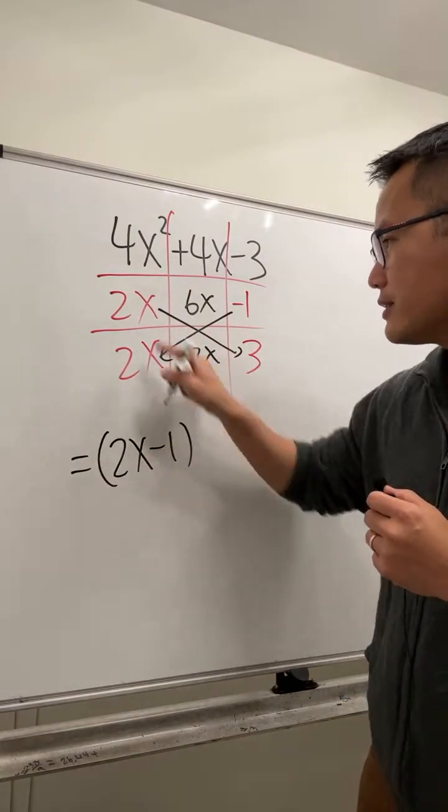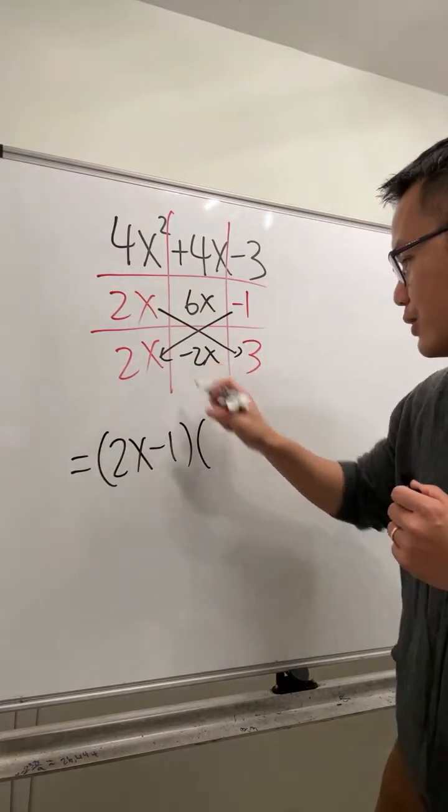You go across, so (2x - 1) times (2x + 3).